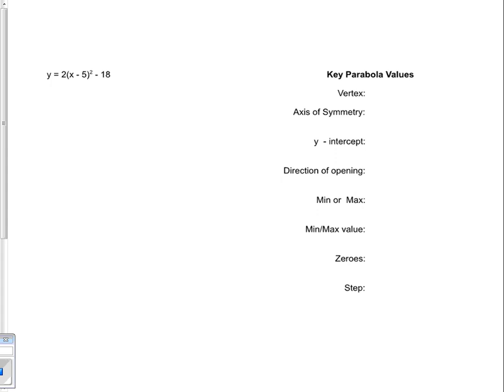We're going to do a second example here. We're going to convert from the vertex form of a quadratic equation and find out as much information as we can about it, and then we'll convert it into standard form and then into factored form.